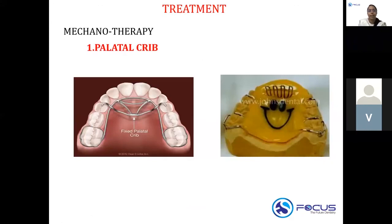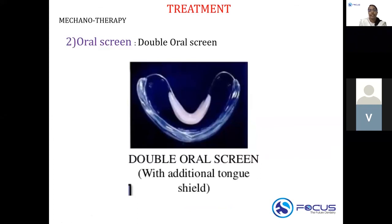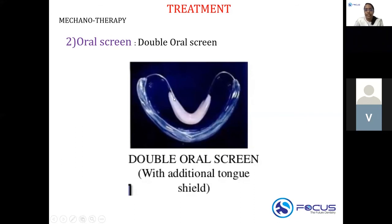In mechanotherapy, you have palatal grips — both fixed and removable. There is also an oral screen, and a modified version called the double oral screen, which has two shields: an outer screen and an additional lingual tongue shield. When the double oral screen is placed inside the oral cavity, the tongue shield corrects the tongue thrusting. This double oral screen is a modification of the normal oral screen used in correction of tongue thrusting.